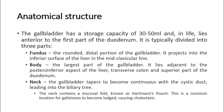For its anatomical structure, the gallbladder has a storage capacity of 30 to 50 milliliters and, in life, lies anterior to the first part of the duodenum. It is typically divided into three parts. The fundus is the rounded distal portion of the gallbladder, and it projects into the inferior surface of the liver in the midclavicular line.